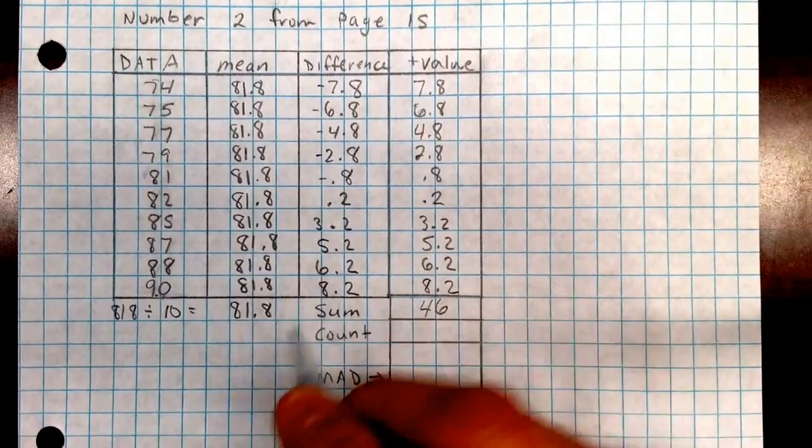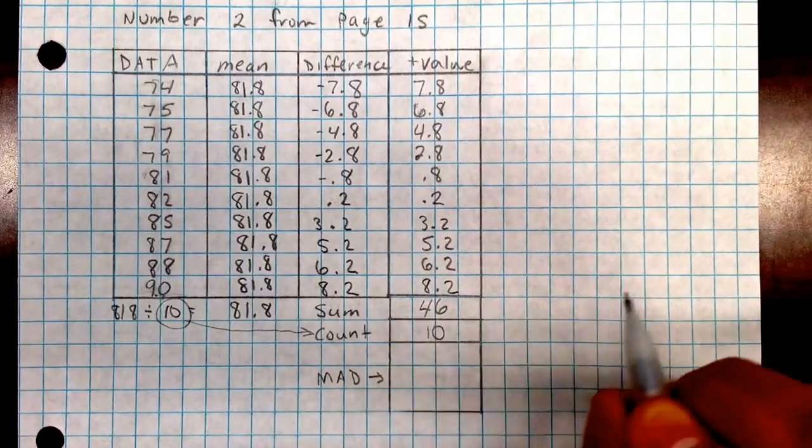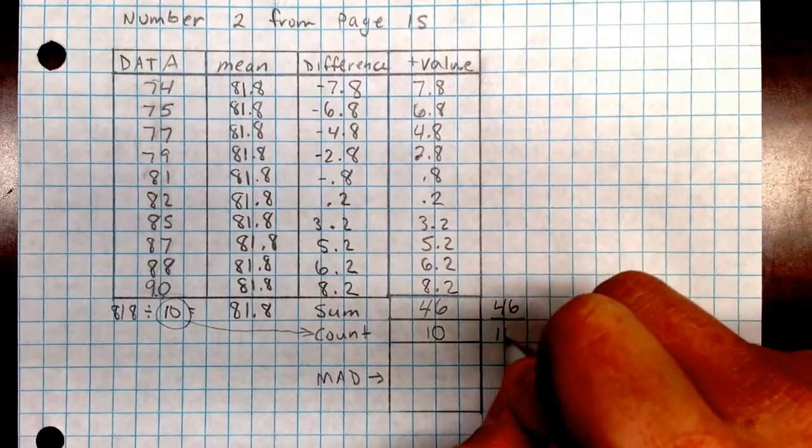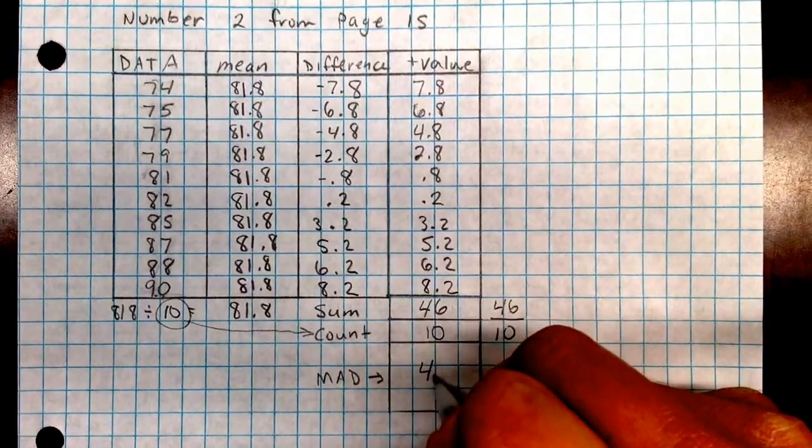Then divide by count, which is 10. Remember this number here is the same as the count right here. That's 10. Then you divide these two. 46 divided by 10 to get the mean absolute deviation, which in this case is 4.6.